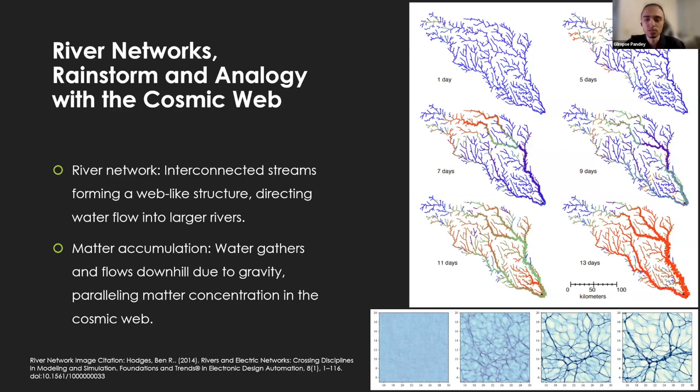Water flows from smaller tributaries into larger rivers much like how matter flows through the cosmic web. In a watershed, water accumulates from rainfall and flows downhill due to gravity, gathering into streams and rivers. This parallels the matter concentration in the cosmic web. The graphic here shows the evolution of a river network through a rainstorm. This is day one and it slowly increases up to 13 days. We can see the increase of water flow; the color roughly represents the water flow in the respective streams.